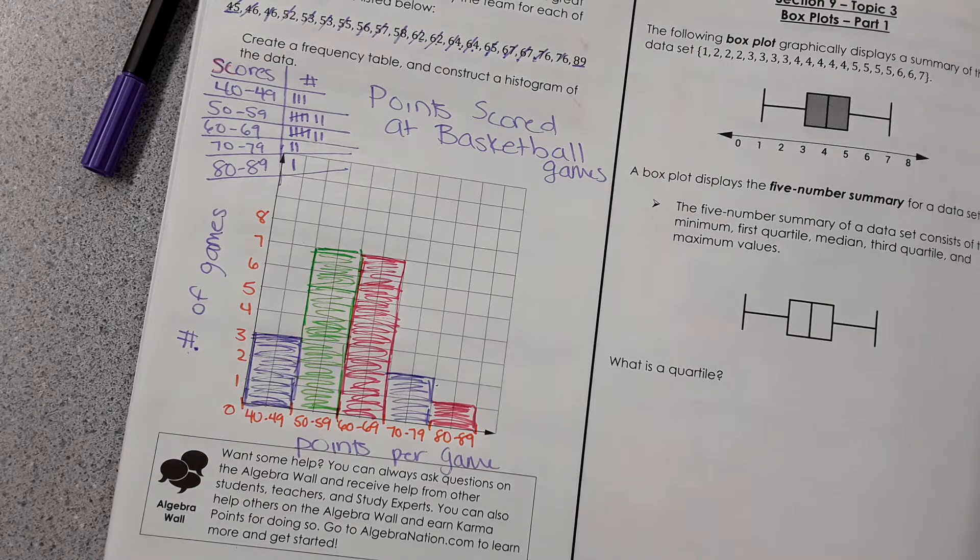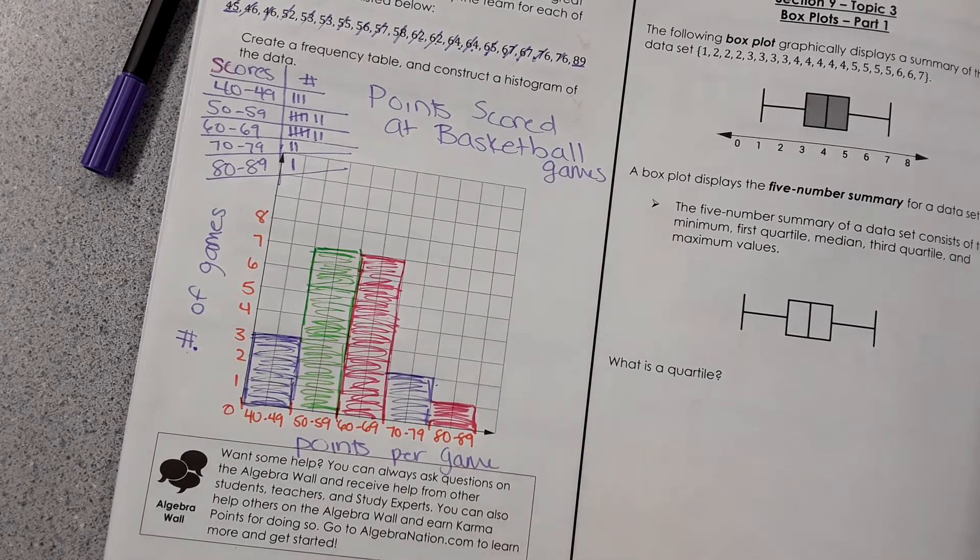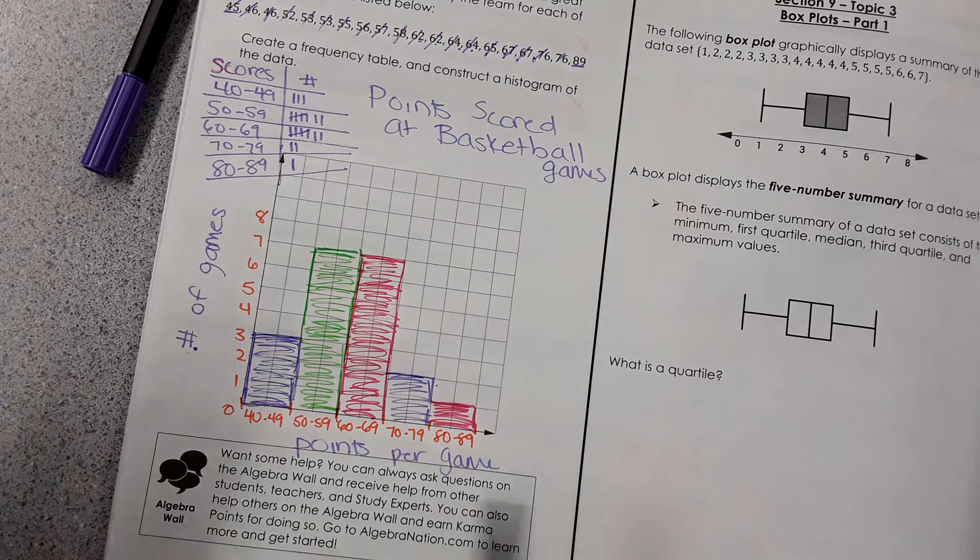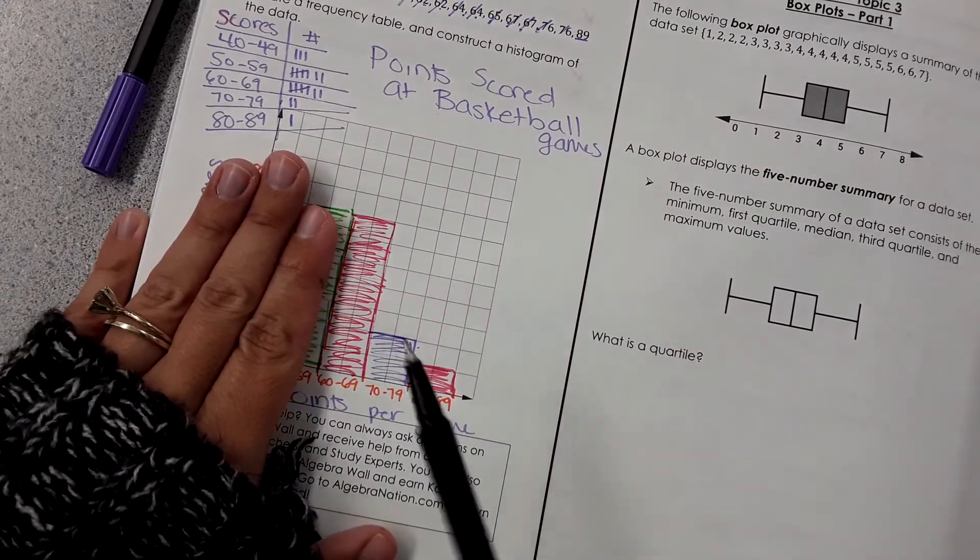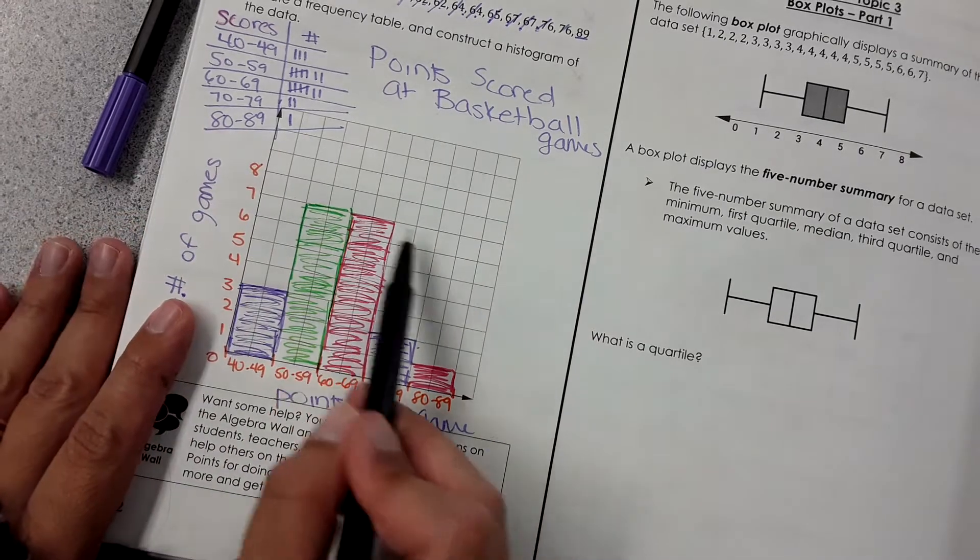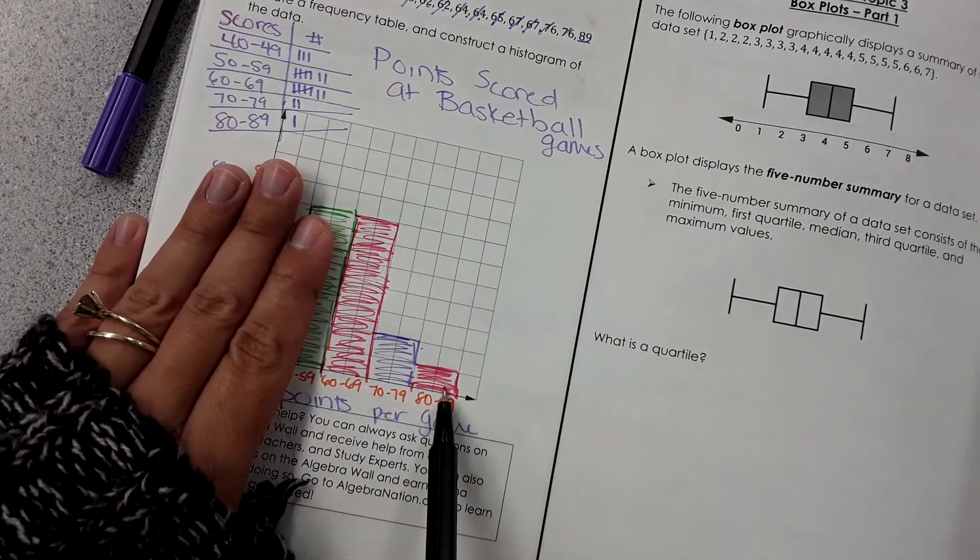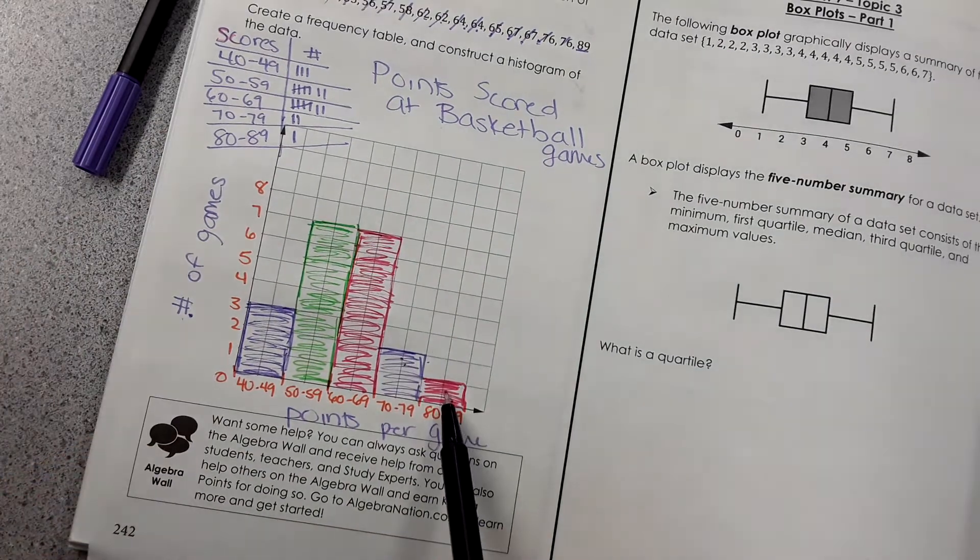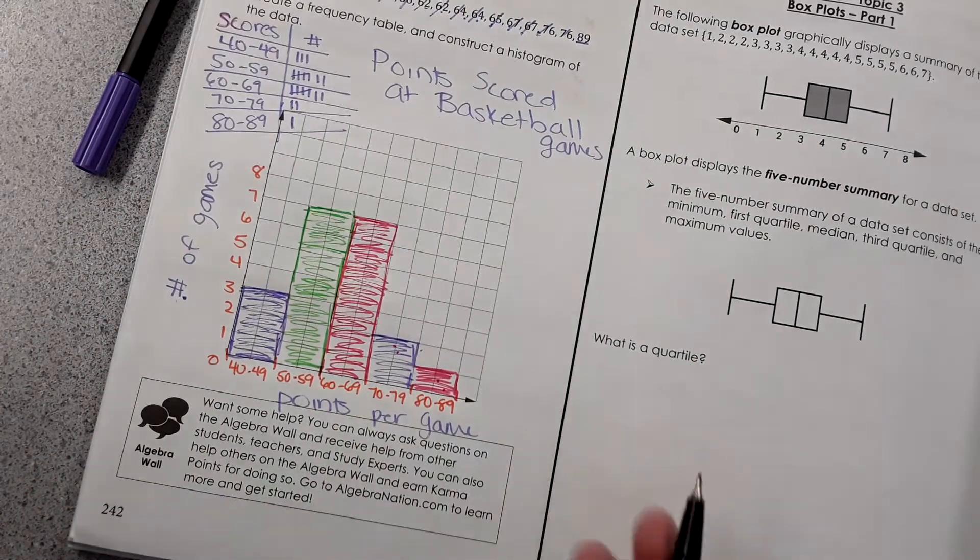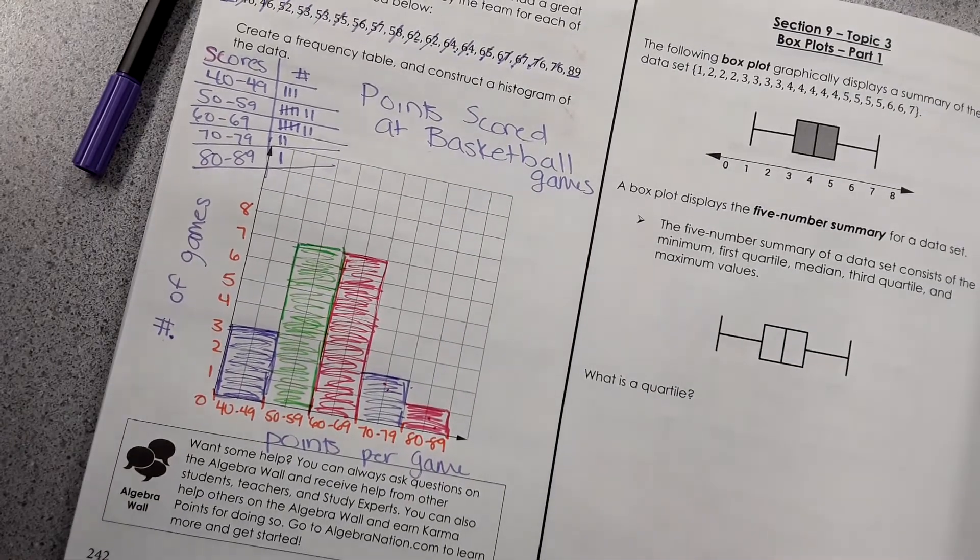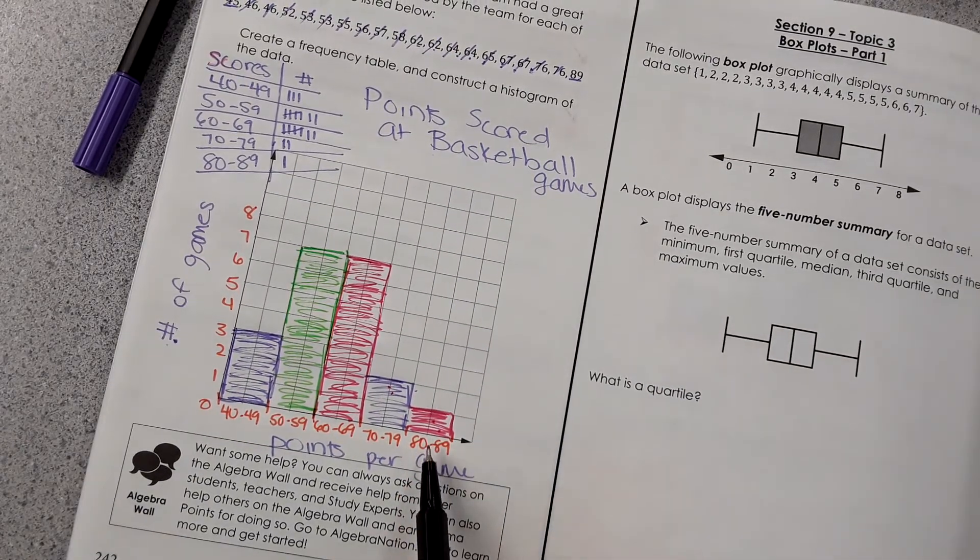When you're asked to analyze this type of data or certain questions that might come up, they might say, how many games did they score that was 60 points and higher? So for that type of question, you would have to add up the frequency of the columns. If they asked how many games had 60 or higher, you would just say seven plus two plus one, which would be 10 games had a score of 60 or higher. They could also ask what was the least frequent score.